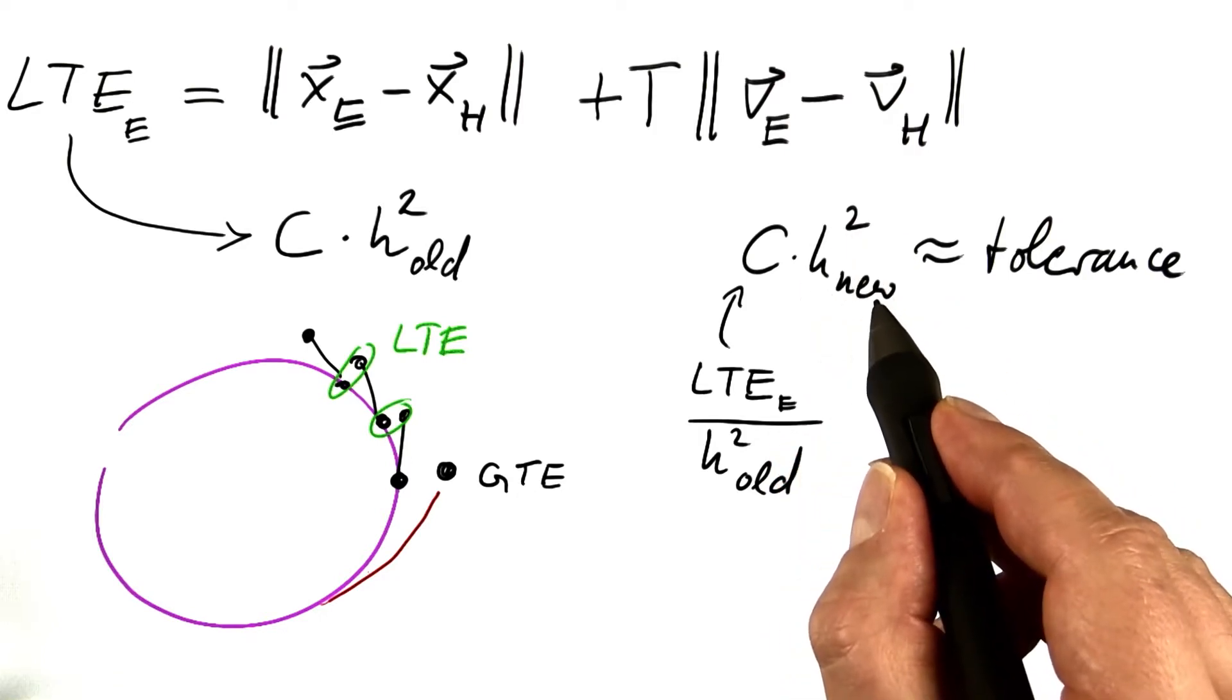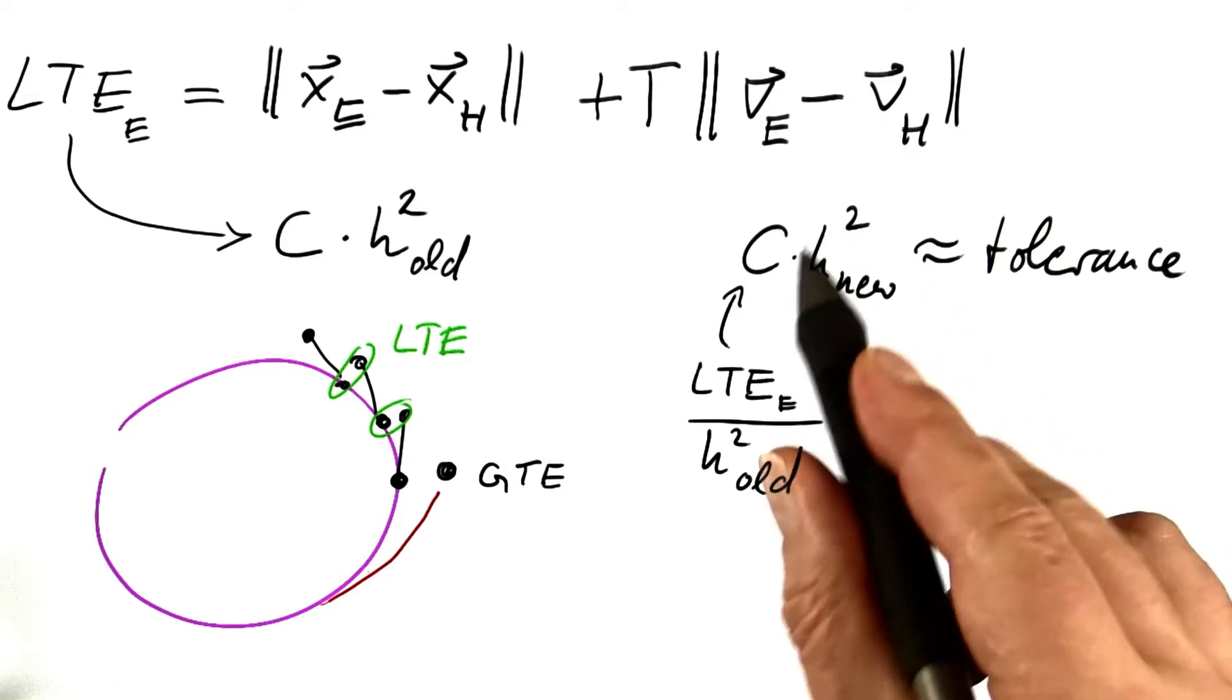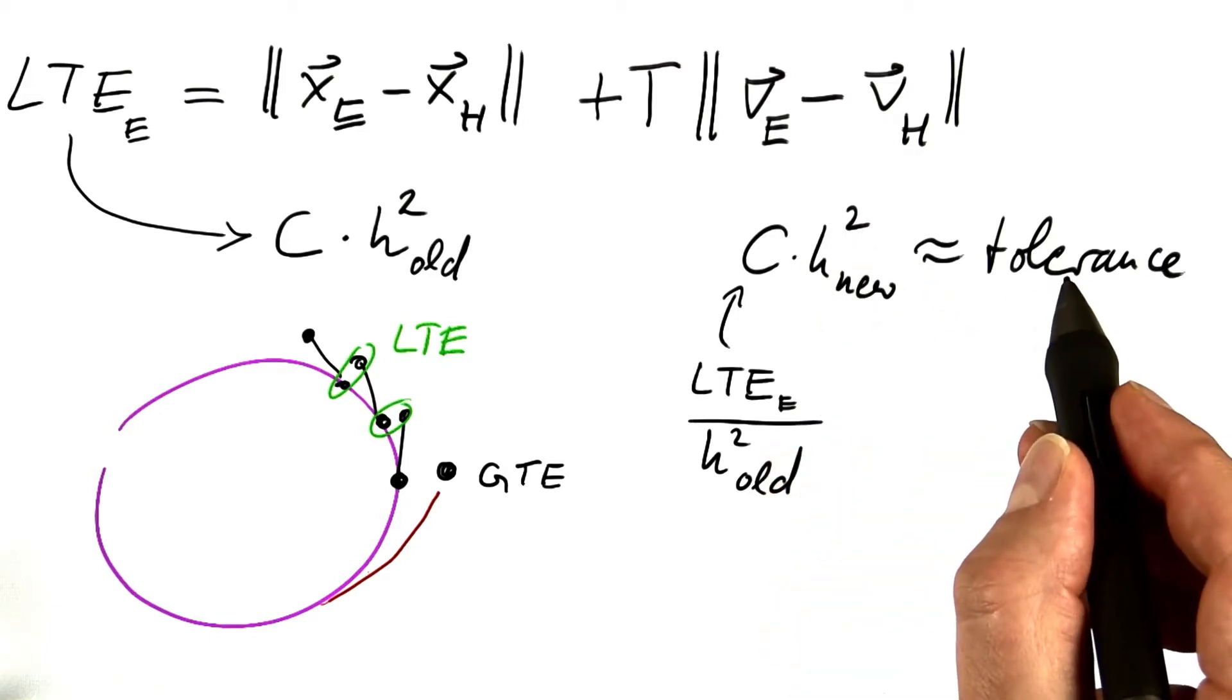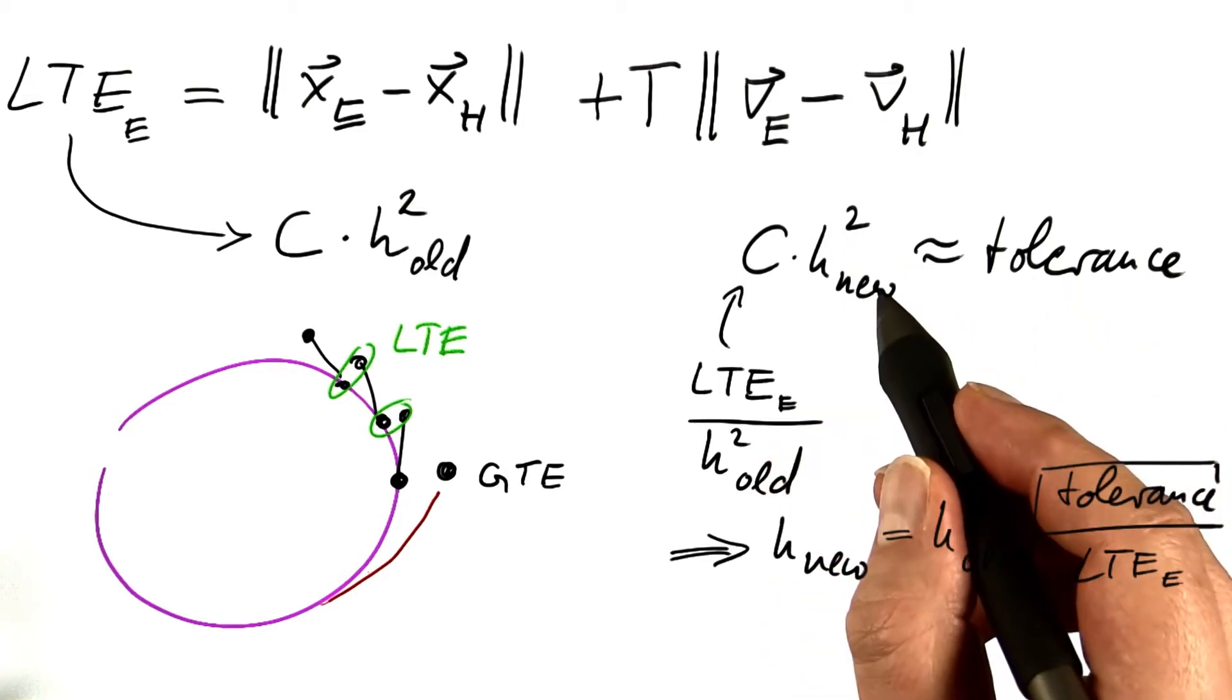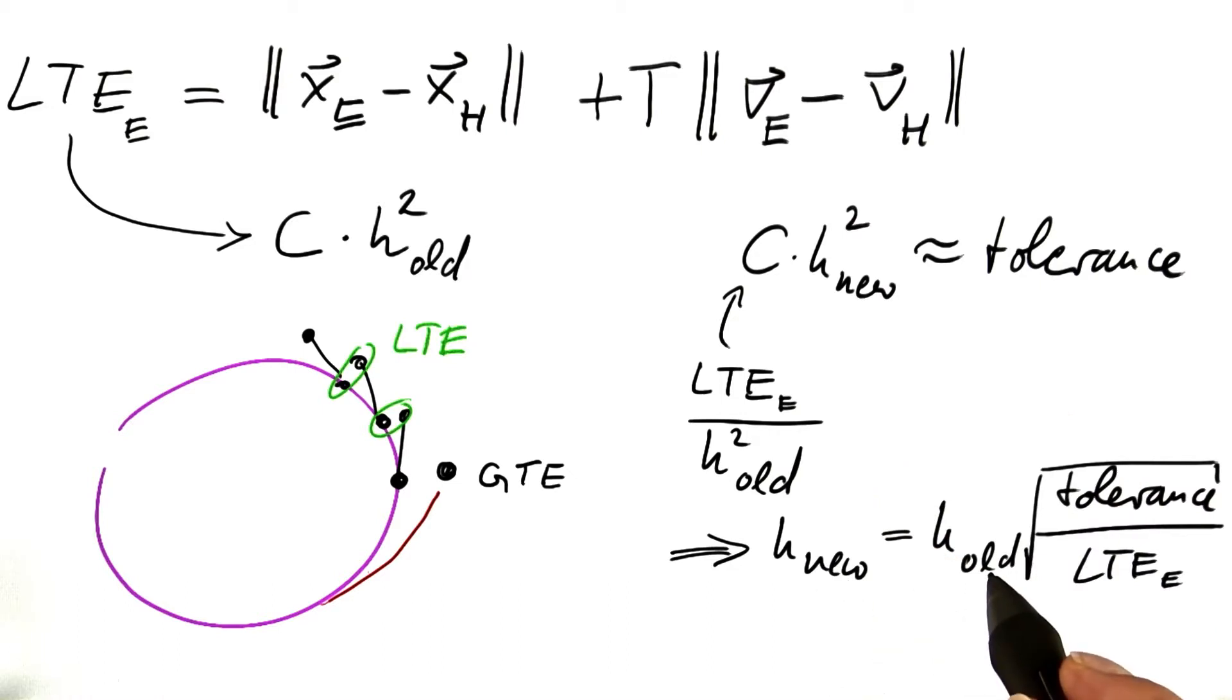So the method actually determines the right step size I should be taking, given the tolerance. I can solve for the new step size and find that the new step size is the old step size times the square root of the tolerance divided by this local truncation error that I can compute numerically.